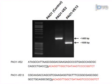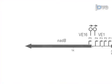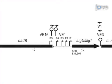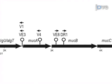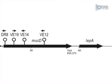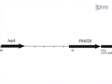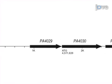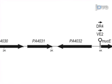Finally, the location and orientation of the mini-Himar1 transposon insertion site are identified within the Pseudomonas aeruginosa PAO1 genome. Ultimately, the use of mini-Himar1 transposon mediated mutagenesis identifies and characterizes those genes associated with the production of alginate in Pseudomonas aeruginosa.